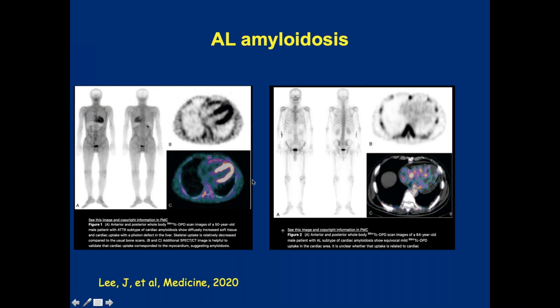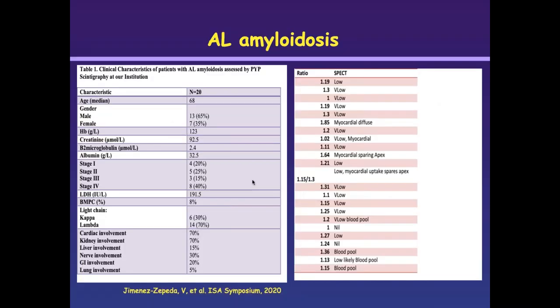Around 40% of people with light-chain amyloid might have some form of mild uptake on the scintigraphy, which is important because it helps us recognize one entity versus the other. We use the ratio between the heart uptake and the contralateral area on the chest, and also look at the blood pool by doing SPECT CT to differentiate whether it's just the blood containing the radiotracer versus true uptake. This is a group of 20 patients with biopsy-proven light-chain amyloid where we looked at pyrophosphate scintigraphy — around 10% of people with very advanced heart disease can actually have a positive test.